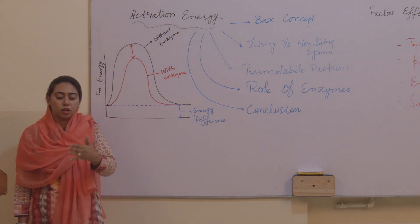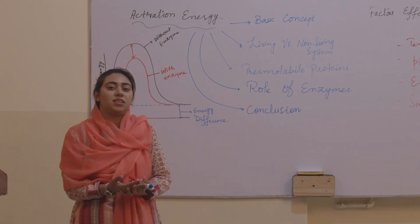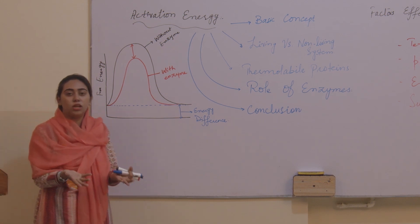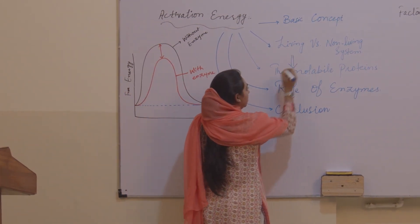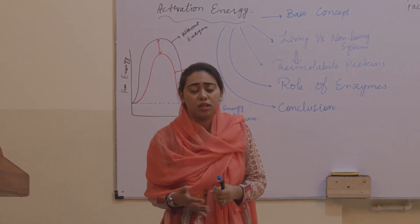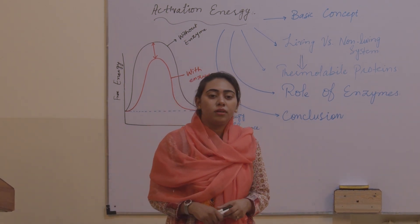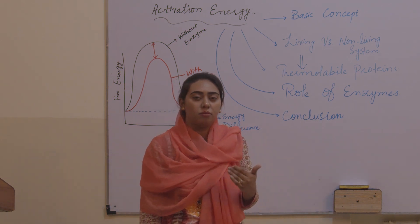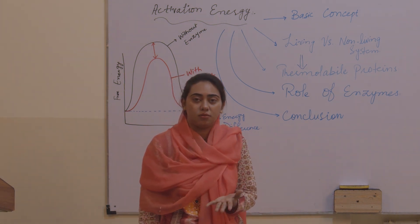For a non-living system, if you want to add something into water, we can heat it up directly — we can provide heat. But for living systems, that is not possible. We cannot provide direct heat to a living system because living systems have certain thermolabile proteins. These thermolabile proteins are highly sensitive to temperature. The enzymes in living systems work at a very optimal condition. For example, in the human body, there are 1300 different enzymes in a human cell.